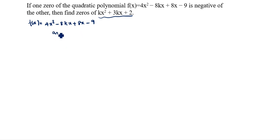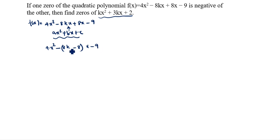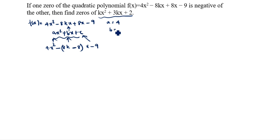We will write this in the standard format ax² + bx + c. So we write it as 4x² - (8k - 8)x - 9. This is a very important step. So a = 4, b = -(8k - 8), and c = -9.